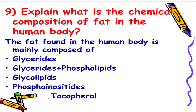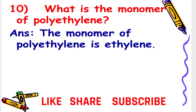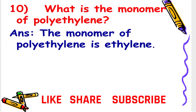Next: Explain what is the chemical composition of fat in the human body? The fat found in the human body is mainly composed of glycerides, glycerides plus phospholipids, glycolipids, phosphoinositides, and tocopherol.